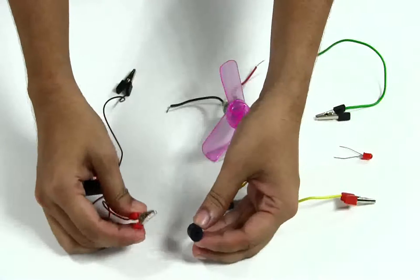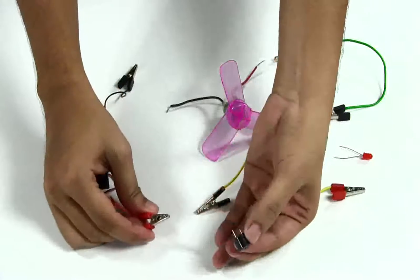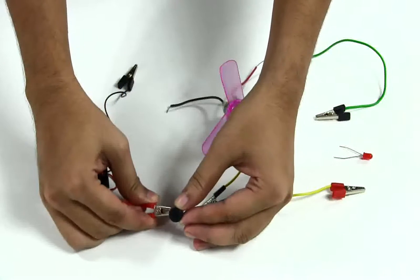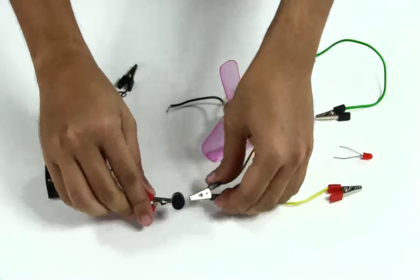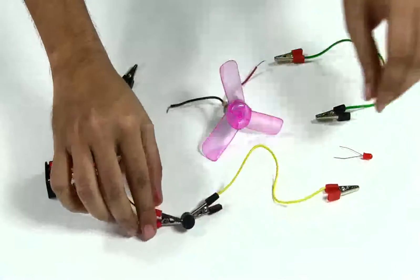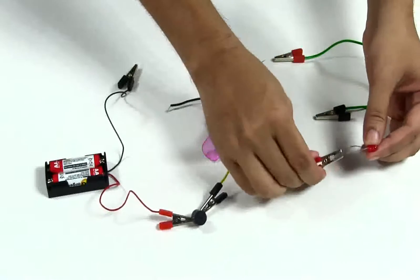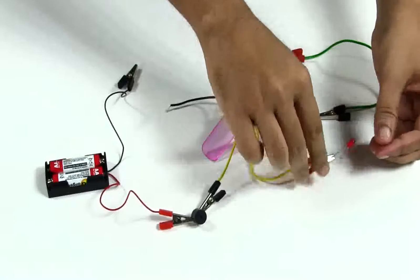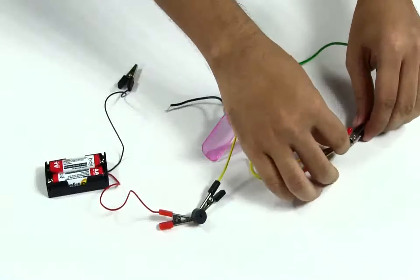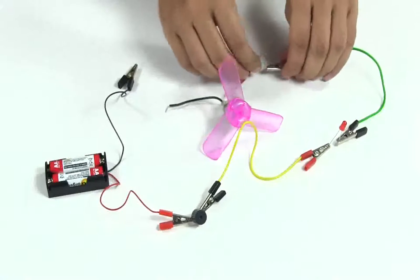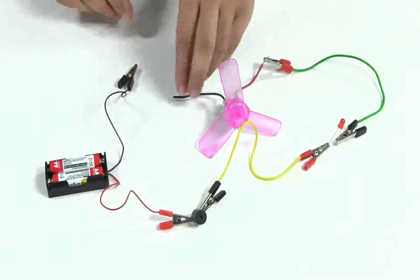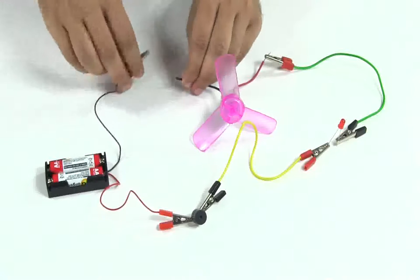First, make sure this red end goes to the bigger leg of the buzzer. The other end goes to the LED, and again, make sure the red end goes to the bigger leg of the LED. The other end of the LED goes to our motor, and finally, the remaining end of the motor goes to the battery's negative.